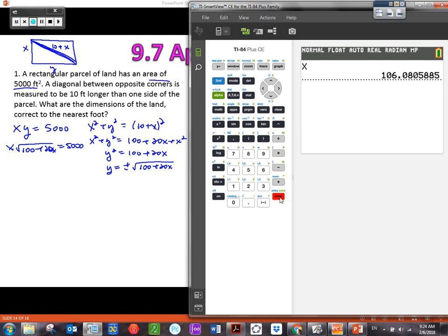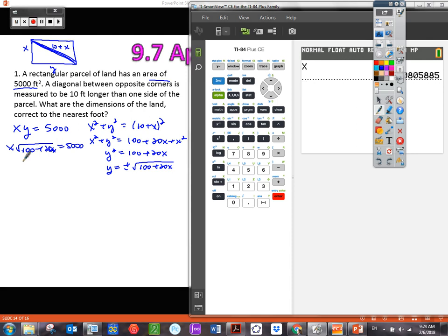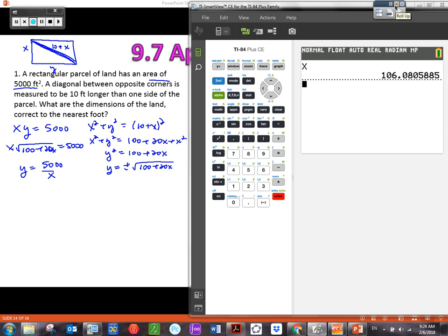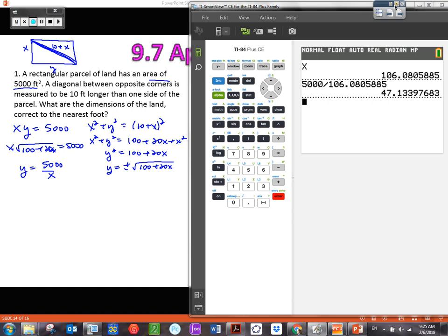I need to find the y value. I certainly could go back to this and plug in that x value, but that's fairly complex. I would rather use the area equation. That seems much easier. Let's solve for y: y is going to be 5000 over x. So we need to do 5000 divided by this x value. That gives us our y value, the other side or dimension. They want us to go to the nearest foot. So our answer would be 106 feet by 47 feet. Those would be the dimensions.